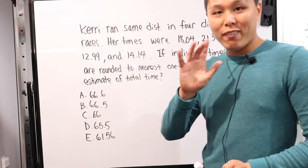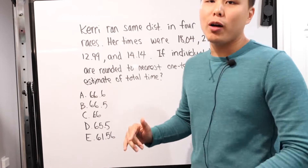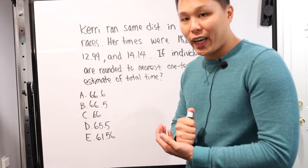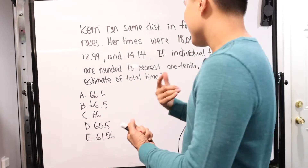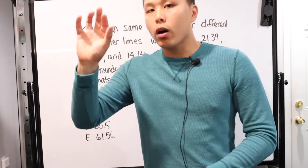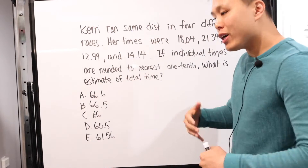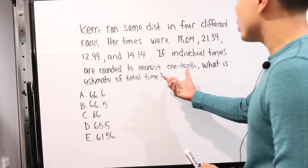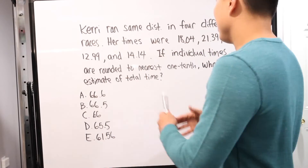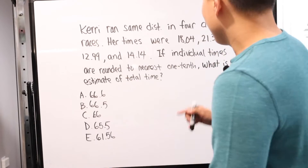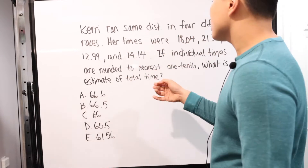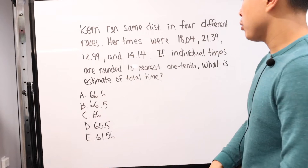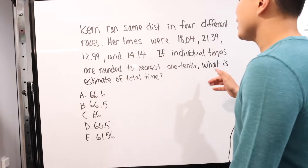For this second problem, I actually remember this one because when I first did it, I thought it was the stupidest problem ever. It gives you this instruction about rounding to the nearest one-tenth, and the times are in seconds. Kerry ran the same distance in four different races with times of 18.04, 21.39, 12.99, and 14.14. If the individual times are rounded to the nearest one-tenth, what is the estimate of the total time?